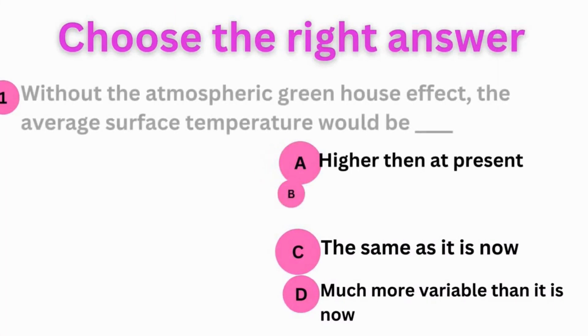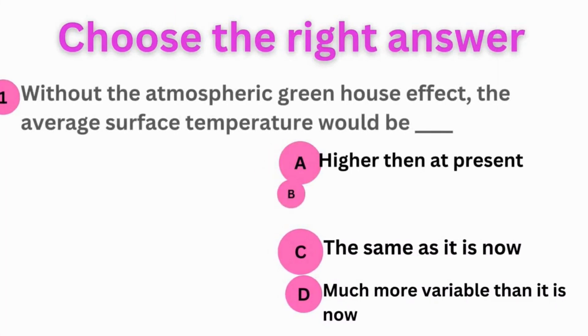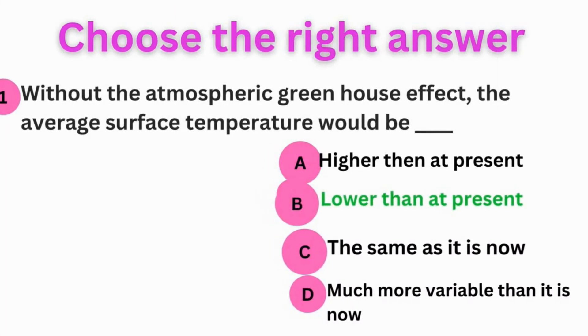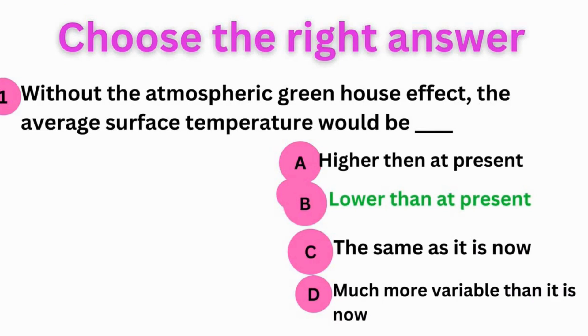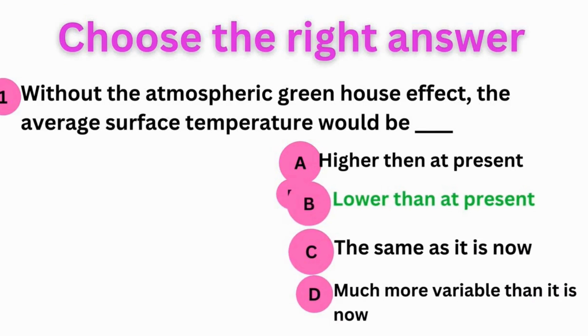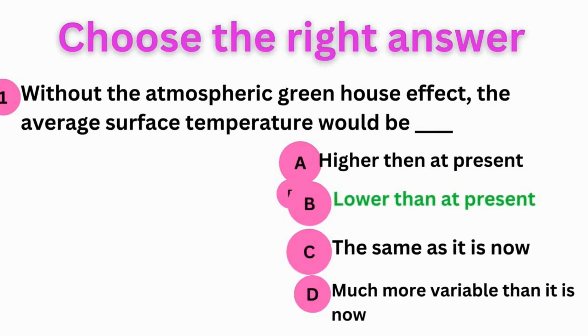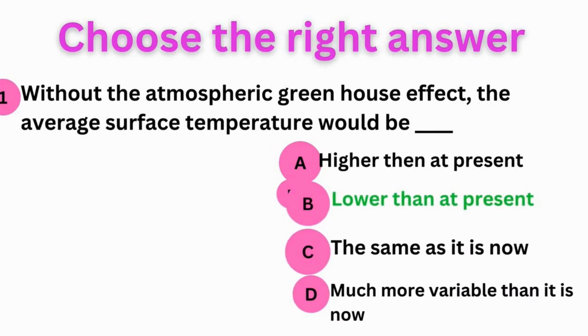The first question is: without the atmospheric greenhouse effect, the average surface temperature would be? The correct answer is B — lower than at present.